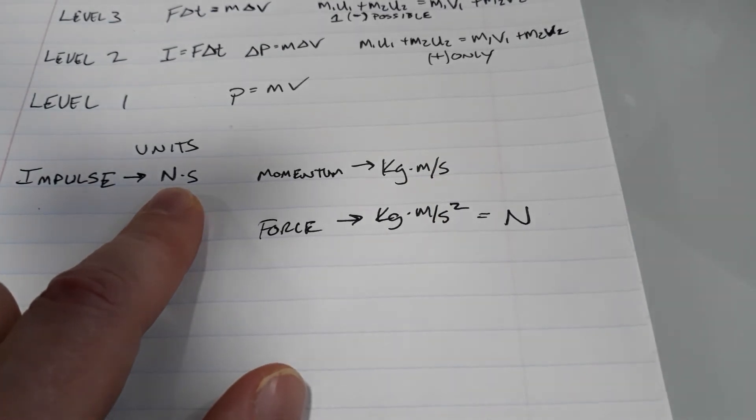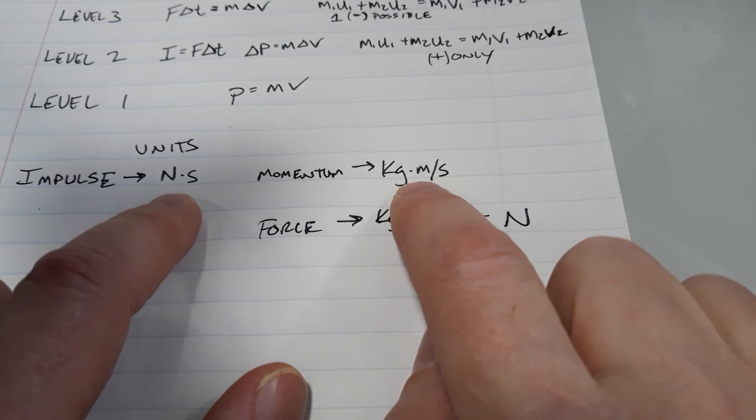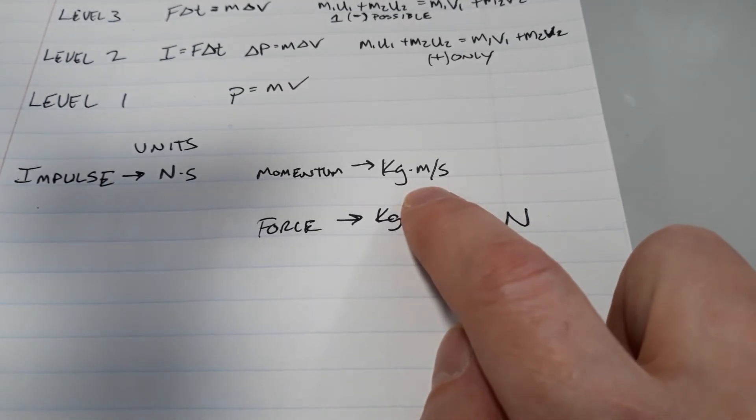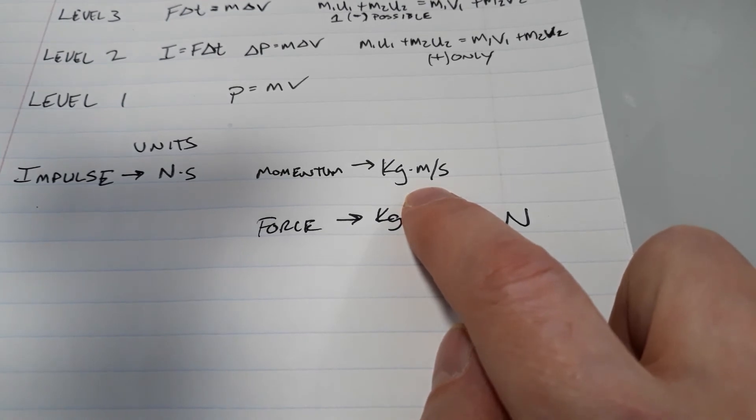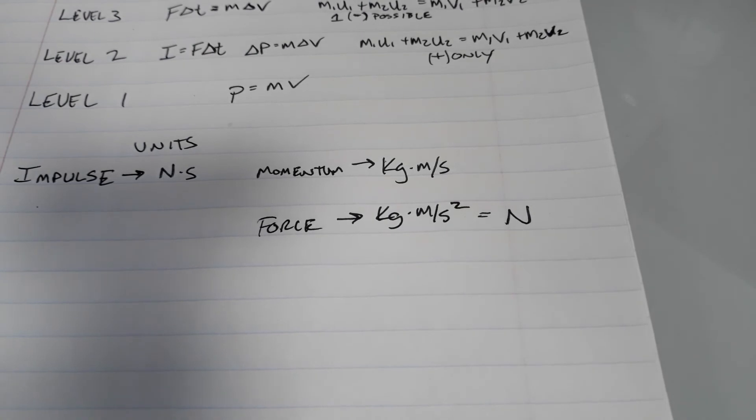So Newton seconds and kilogram meters per second are absolutely the same thing. And I would never deduct. If you put the wrong units, if I say what was the momentum and you say this many Newton seconds, I'll say that's fine, I'll let that go. If I ask for impulse and you say it was this many kilogram meters per second, I'll say that's a little weird, but I'll let that go. And let me explain it this way. It's not wrong because they are equivalent, but I would say it's very much like this.